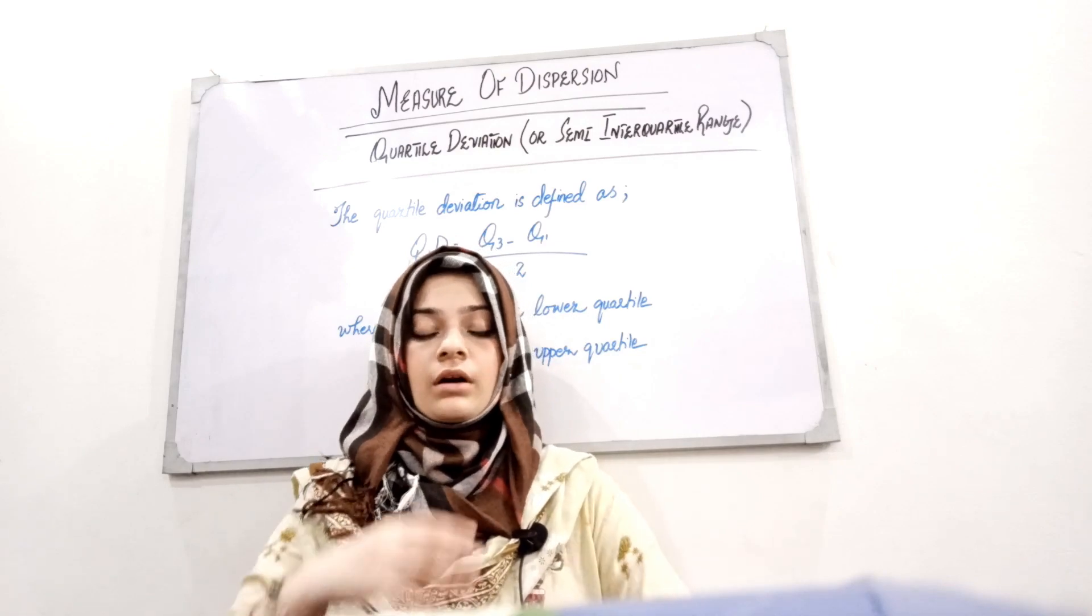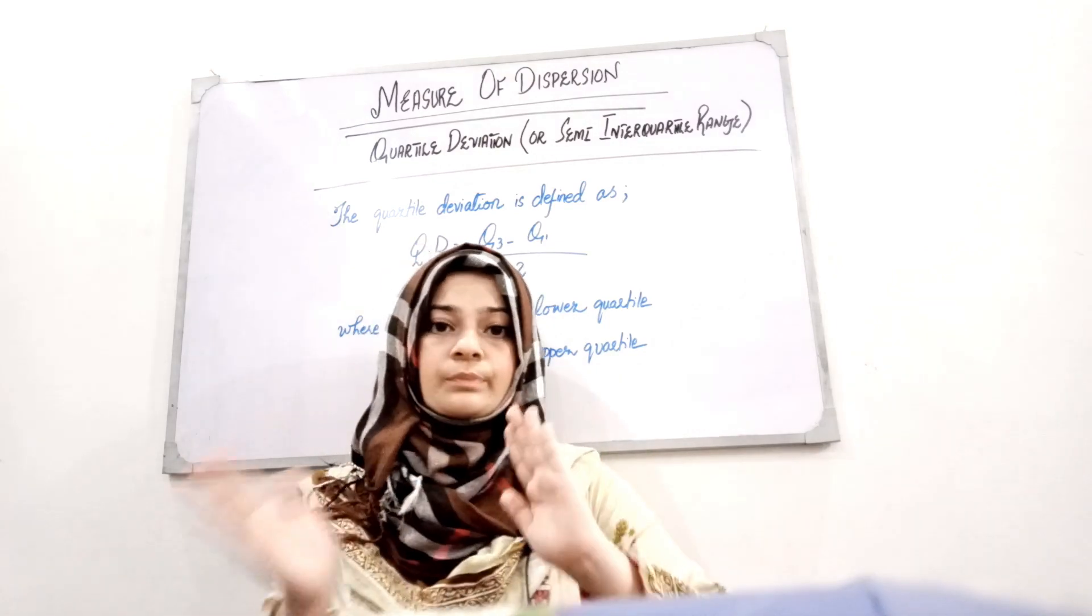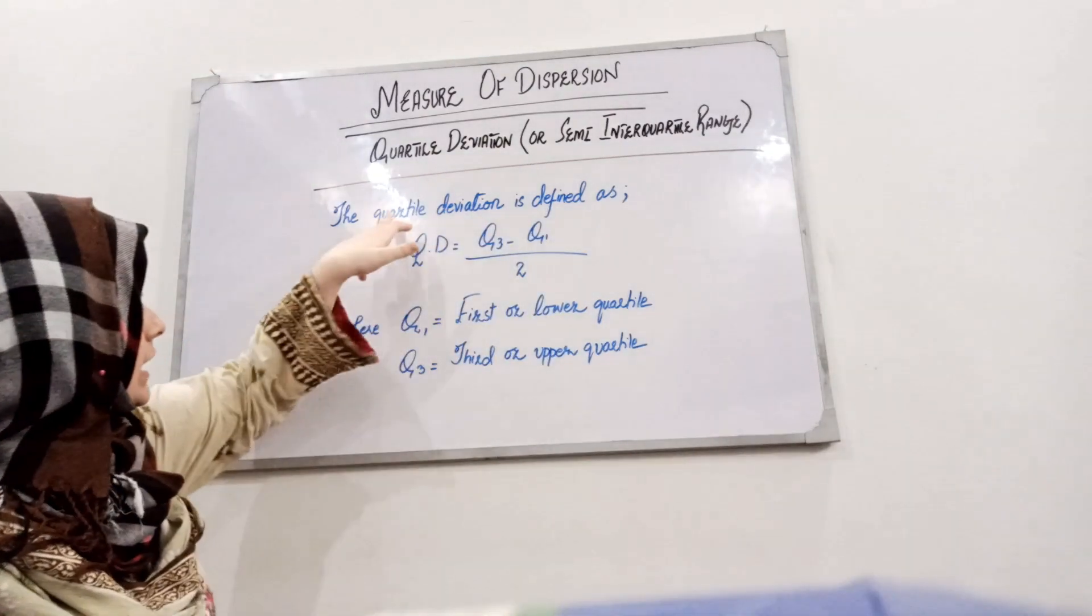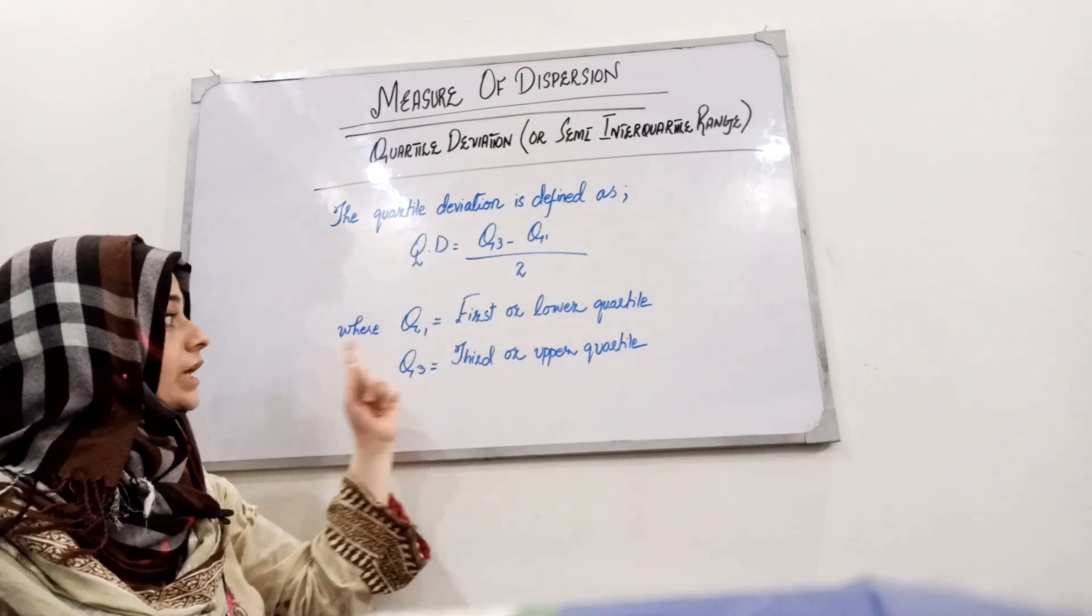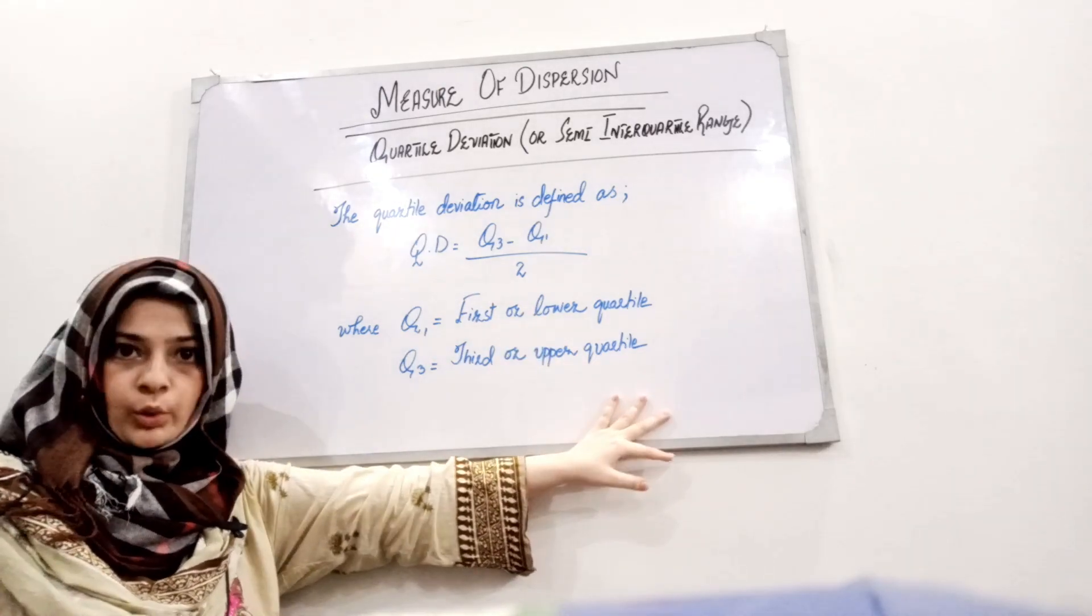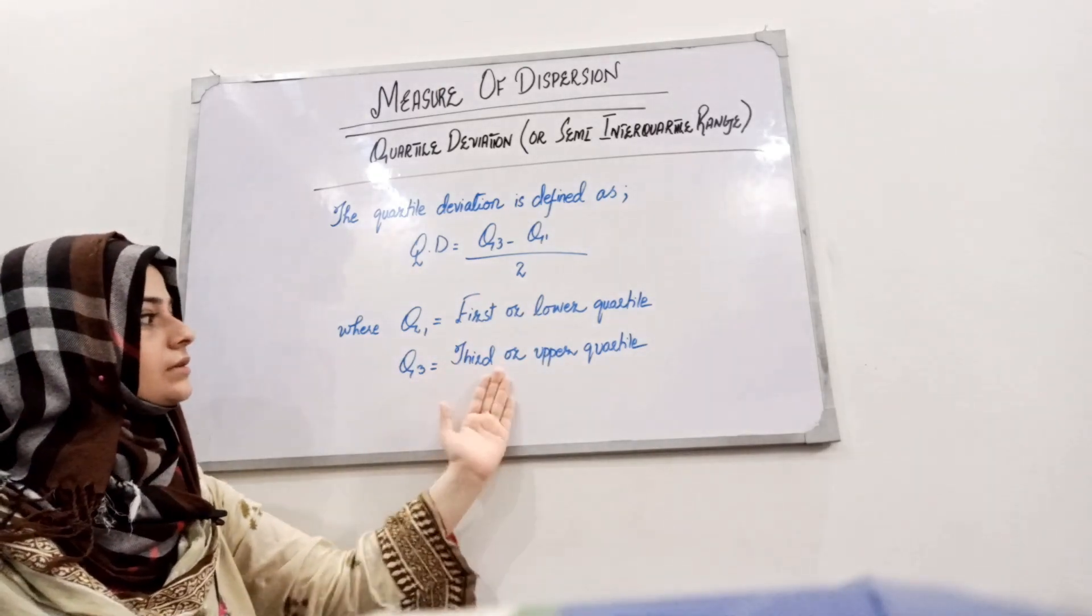other words, the range of these two quartiles. Quartile deviation is defined as QD, which is Q3 minus Q1 divided by 2, where Q1 is the first or lower quartile and Q3 is the third or upper quartile.